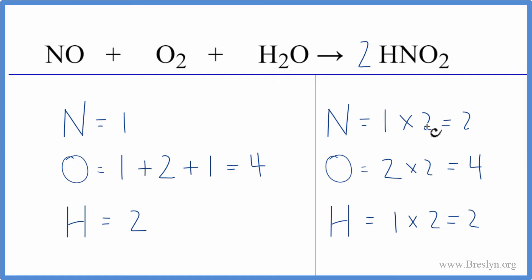We're pretty close. Let's balance the nitrogens by putting a coefficient of 2 in front of the NO. So you have 1 times 2. So now the nitrogens are balanced but we need to update the oxygens.